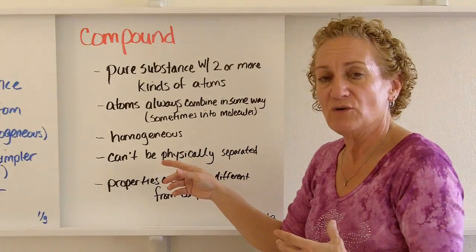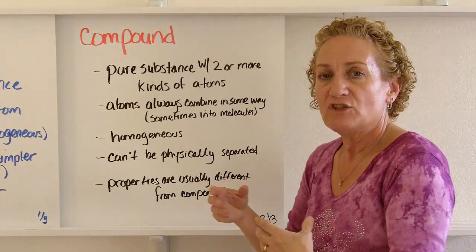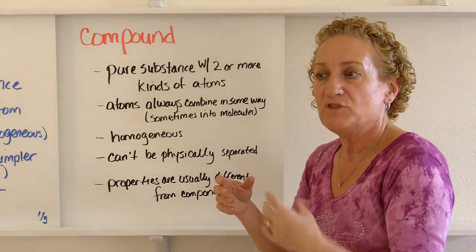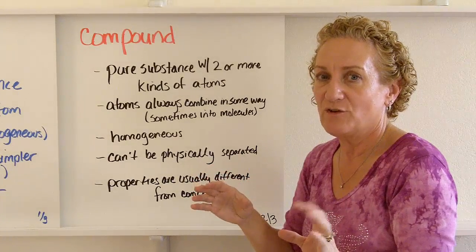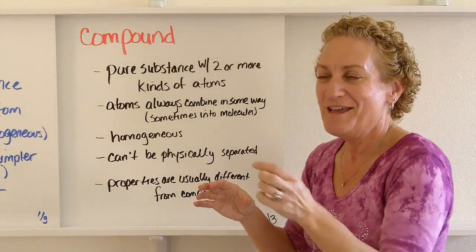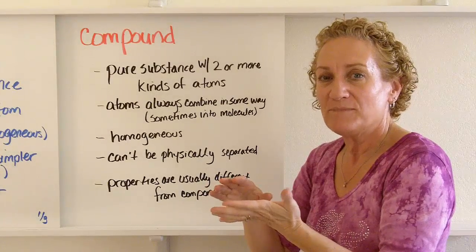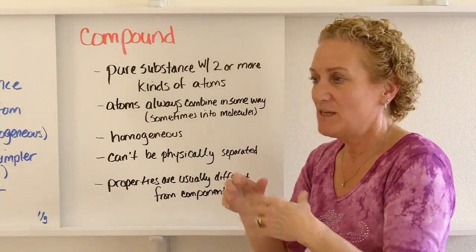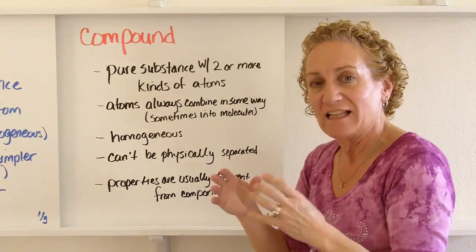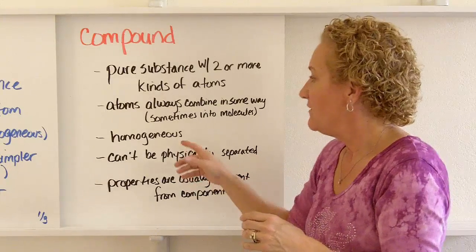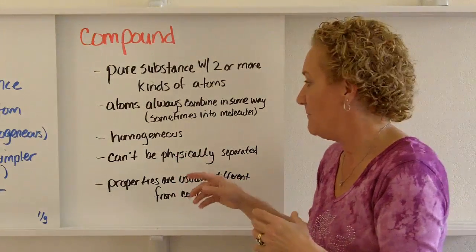Compounds are homogeneous also, which means they're the same throughout. Just like an Oreo cookie is always two cookies and one cream — every time you get an Oreo, it's two cookies and one cream, exactly the same. That's what homogeneous means.